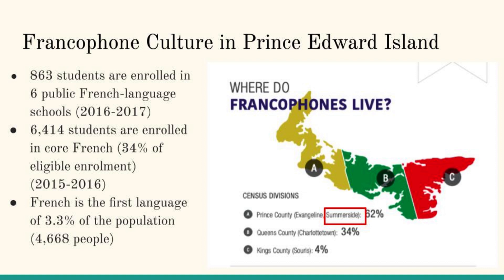Taken from Statistics Canada's 2016 Census, 863 students are enrolled in six public French-speaking schools. There are 6,414 students enrolled in Core French, which is a compulsory program that has students learning French as a subject, just like Math and Language Arts. The French language is found beyond education — it is the first language of 3.3% of the population. However, 13% of the population, which is 70,840 people, can speak both French and English, a 5% increase from 2011. Overall, these statistics show that the French language is integral to the culture of Prince Edward Island, directly linked to the history of the Acadians, the island's first French settlers.